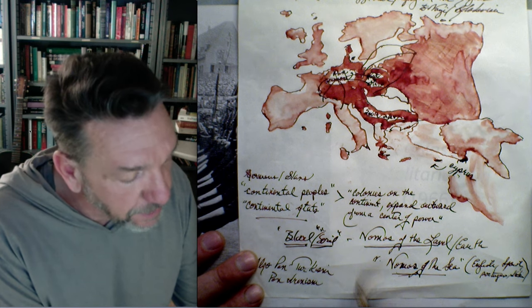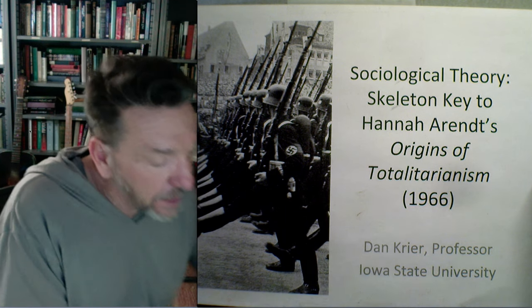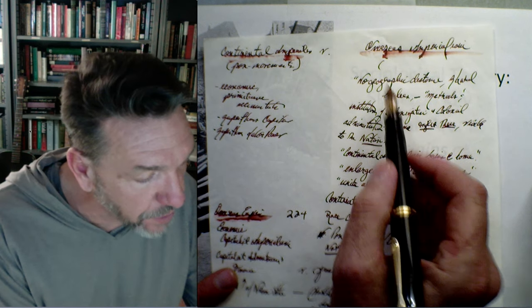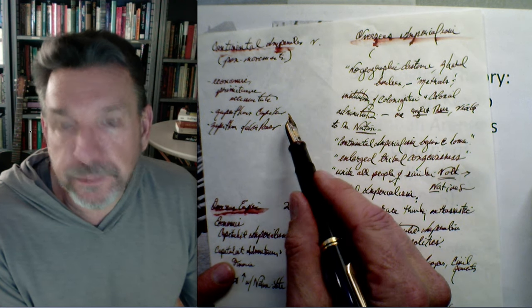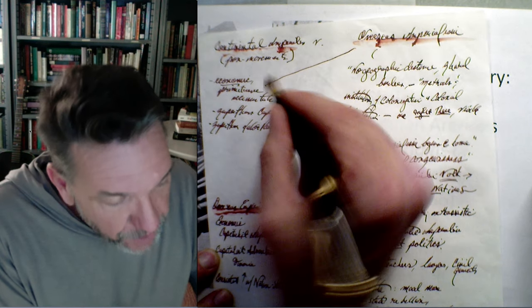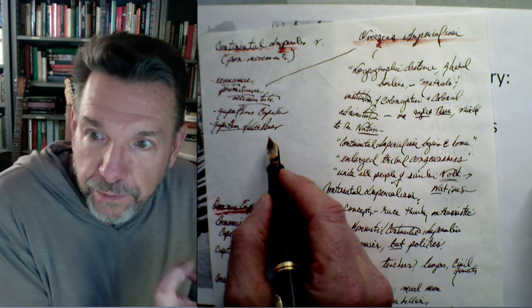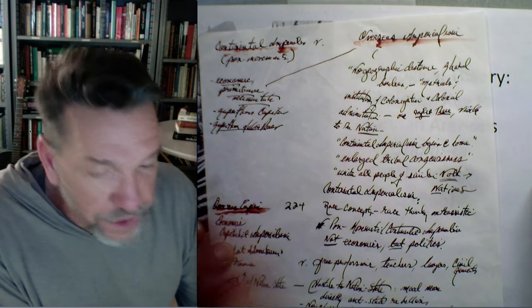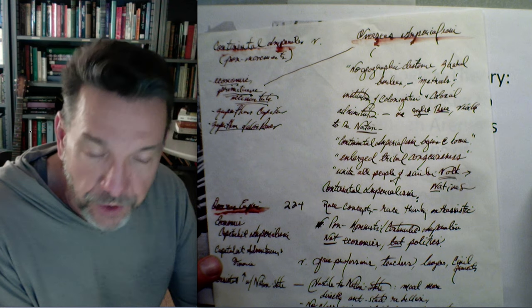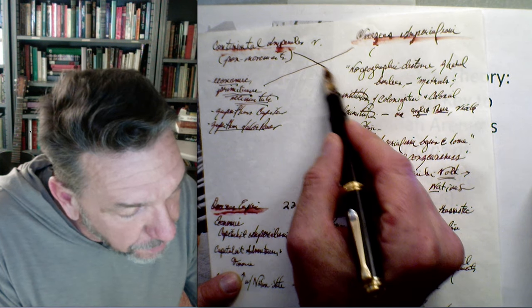So continental states expand outward following a logic distinct from those that expand overseas. Continental imperialism follows the logic of the pan movements — trying to reunite territories — and that's different from overseas imperialism. Overseas imperialism tends to be economic, following the logic of primitive accumulation, where superfluous capital and superfluous people go in search of territories to conquer primarily to prevent a capital accumulation crisis. The pan movements are distinct from this.